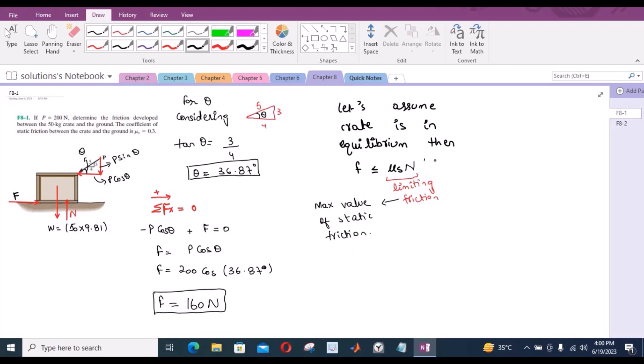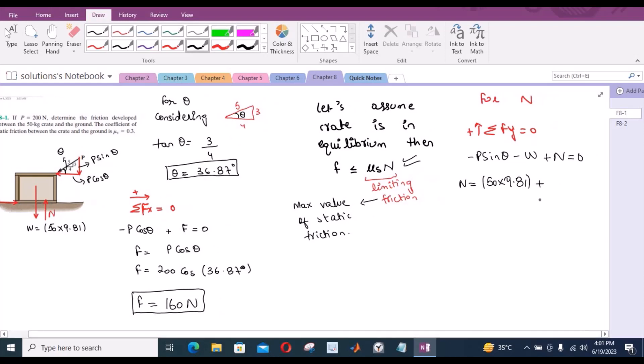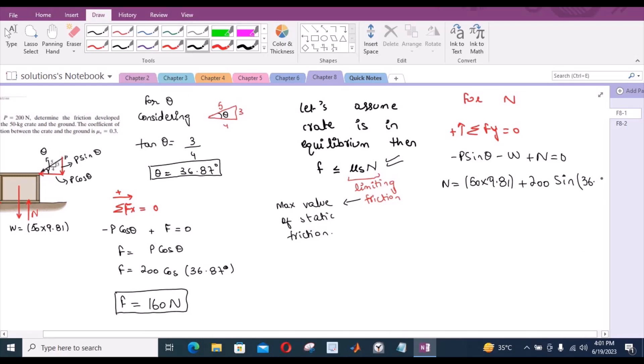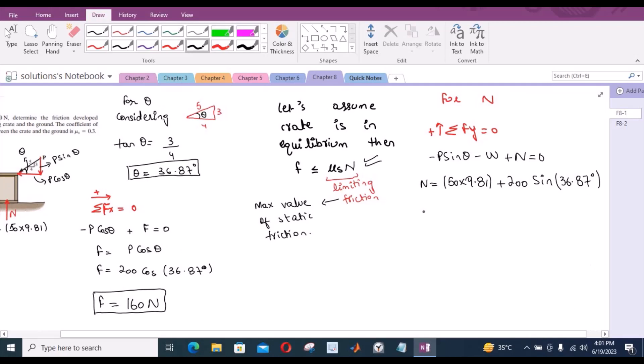Now we have to verify this condition. For that, we need to find the normal reaction N. We sum the forces in the y direction as well. Sum of forces in y direction equals 0. I'm considering up as positive. We have negative P sin theta minus W plus N equals 0. From here, N equals 50 into 9.81 plus 200 sin 36.87. N becomes 610.5 N.